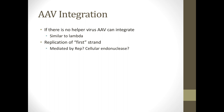If an adeno-associated virus infects a cell without a helper virus co-infection, these adeno-associated viruses can actually integrate into host genomes, similar to what is seen in bacteriophage lambda. The replication of the first strand leads to double-stranded DNA formation, and then integration into the host genome may be mediated by the rep or non-structural proteins, or potentially cellular enzymes.